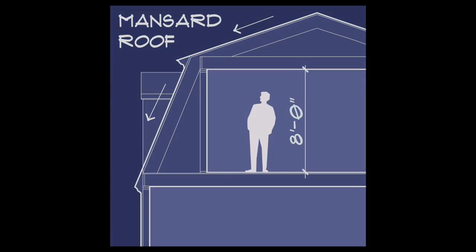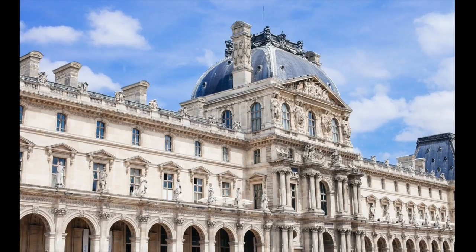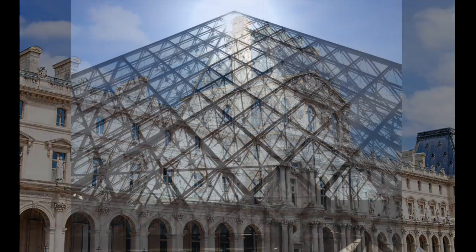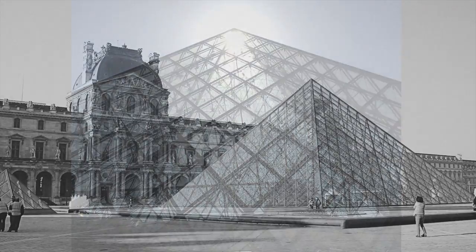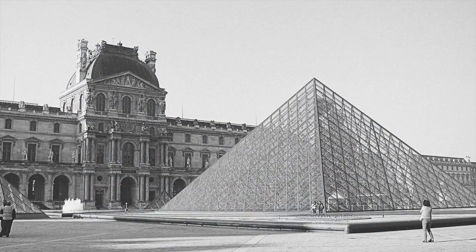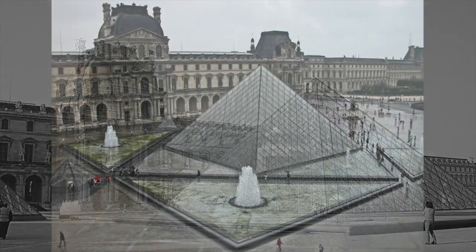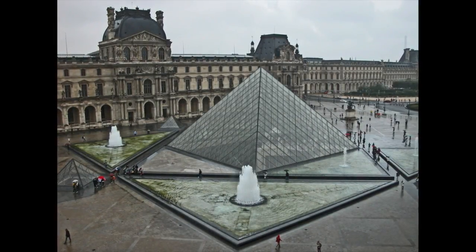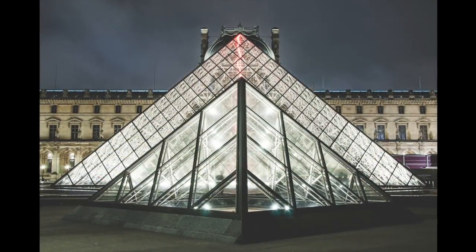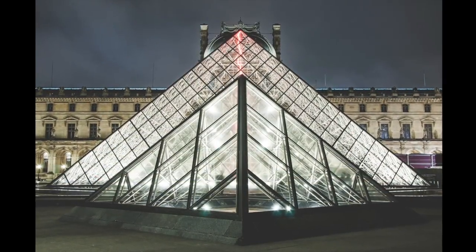I.M. Pei's Louvre addition in Paris, France is innovative because of how different it is aesthetically to the building complex it was added to. Today it still stands as a lasting example of what architects call stylistic juxtaposition.